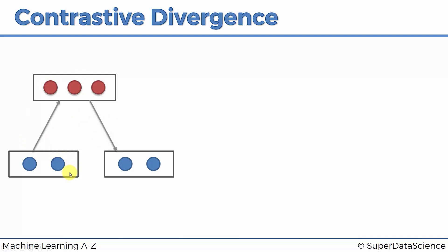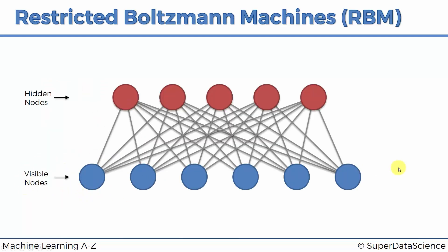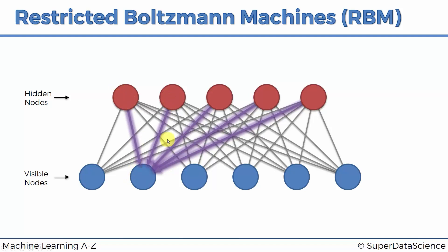Let's look at why the reconstructed inputs don't equal the original inputs in more detail. Here we've got our restricted Boltzmann machine with visible nodes and hidden nodes. Once we've reconstructed our visible nodes, how come they're not identical to the original ones even using the same weights? Well, the nodes are not individually connected one-to-one. Let's look at node number two as an example. It gets reconstructed based on the values of all five hidden nodes.